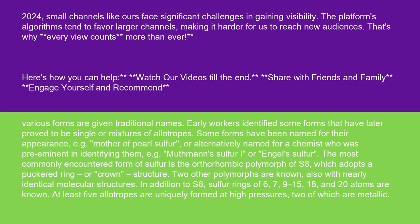The most commonly encountered form of sulfur is the orthorhombic polymorph of S8, which adopts a puckered ring or crown structure. Two other polymorphs are known, also with nearly identical molecular structures. In addition to S8, sulfur rings of 6, 7, 9–15, 18, and 20 atoms are known. At least 5 allotropes are uniquely formed at high pressures, two of which are metallic.